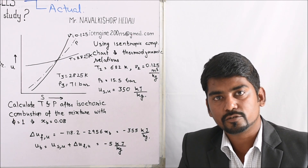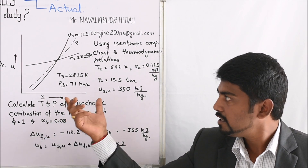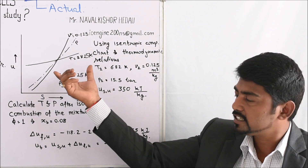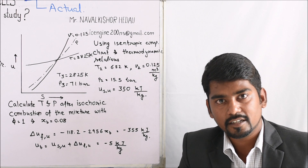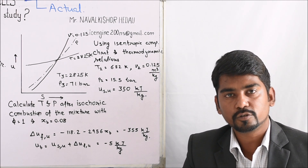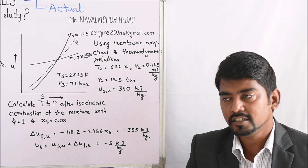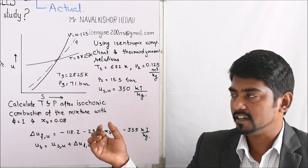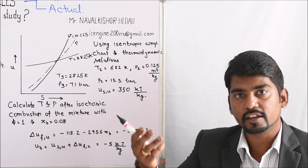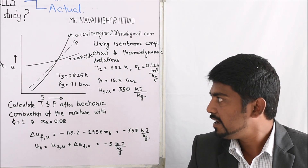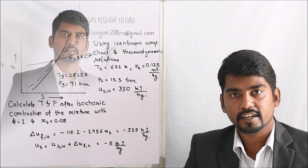There are certain other charts available at different equivalence ratios with different correlations. We simply apply these charts to find out the temperature and pressure conditions at the end of combustion. This is how the fuel air cycle helps determine values closer to the actual conditions. When we consider the air standard cycles, the temperature value is very far away from actual conditions and the difference is very high. That is how we study the fuel air cycle in detail.